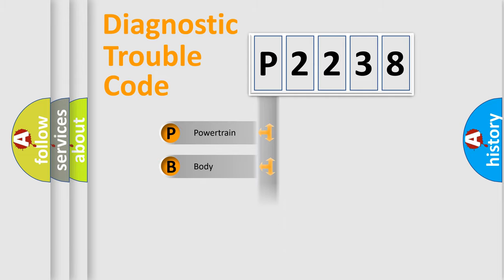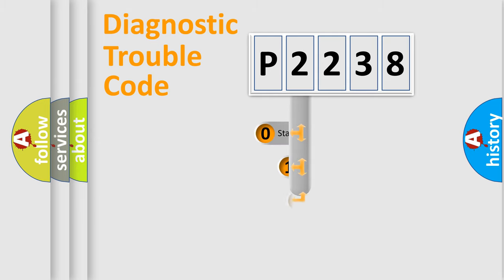Powertrain, Body, Chassis, Network. This distribution is defined in the first character code.